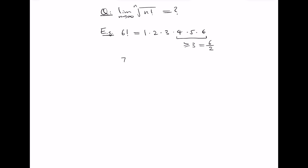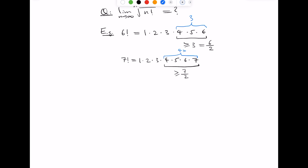Similarly, 7 factorial — which is 1 times 2 times 3 times 4 times 5 times 6 times 7 — has last four factors each bigger than or equal to 7/2. In the case of 6 factorial there were three such factors, and in the case of 7 factorial there were four, and notice that 4 is greater than or equal to 7/2.